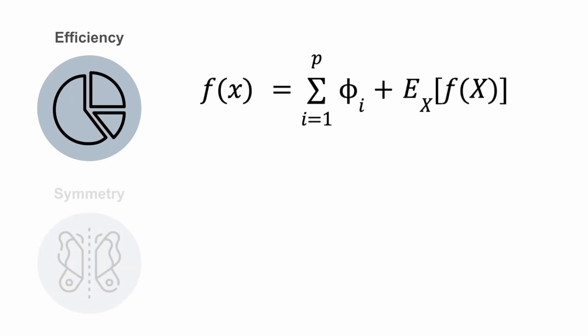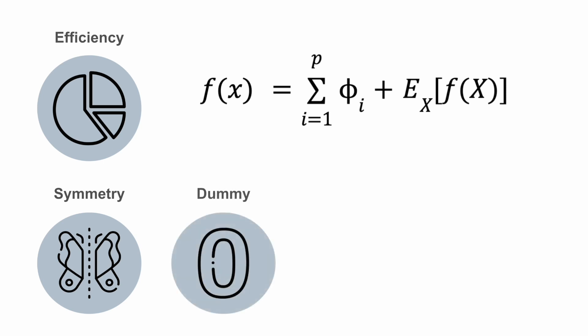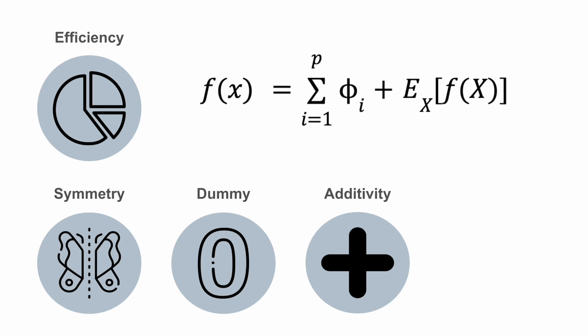The next property is symmetry: two features will have the same Shapley values if they make the same contributions to all coalitions. Dummy, from the null player axiom: a feature will have a Shapley value of zero if it never changes the prediction — in other words, features that are not used in a model will not have a Shapley value. Additivity: Shapley values for machine learning are additive. This is only relevant for ensemble models, where the overall Shapley value is the weighted average of the Shapley values of all the models in the ensemble, where the weight is determined by the same weight given to the predictions of each model.